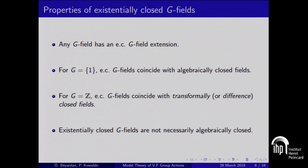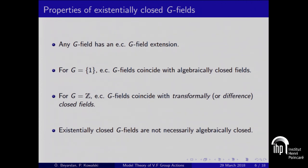We can always go up to an existentially closed G-field extension, like with algebraic closure. If we take the group to be the trivial group, then existentially closed G-fields correspond to algebraically closed fields. If the group is generated by a single element, then the existentially closed G-fields are the transformally closed fields — the models of ACFA. I want to remark that they don't have to be algebraically closed all the time.